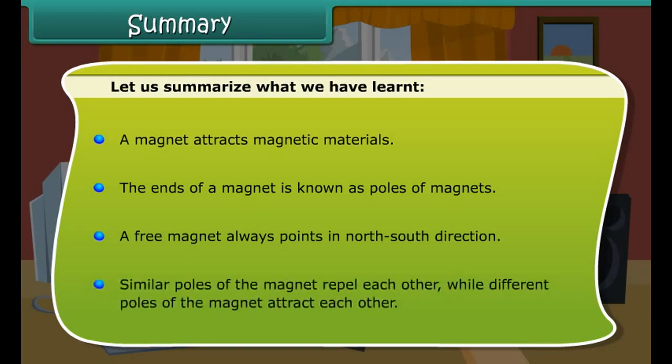Summary. Let us summarize what we have learned. A magnet attracts magnetic materials. The ends of a magnet is known as poles of magnets. A free magnet always points in north-south direction. Similar poles of the magnet repel each other, while different poles of the magnet attract each other.